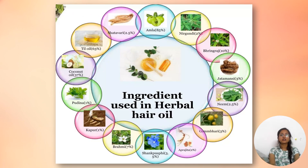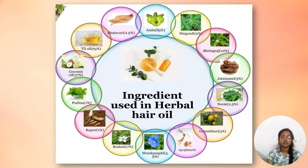Herbal ingredients used in herbal hair oil are Shatavari, Amla, Nirgundi, Bhringraj, Jatamansi, Neem, Gambari, Prajita, Shankhpushpi, Brahmi, Kapoor, Pudina, Coconut Oil, and Tea Tree Oil.